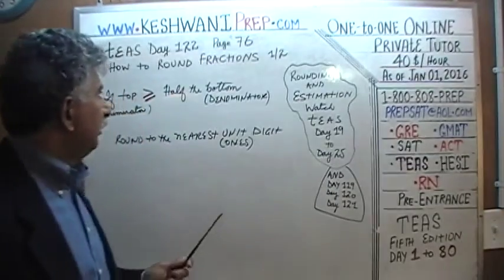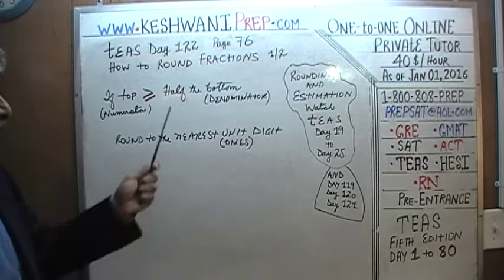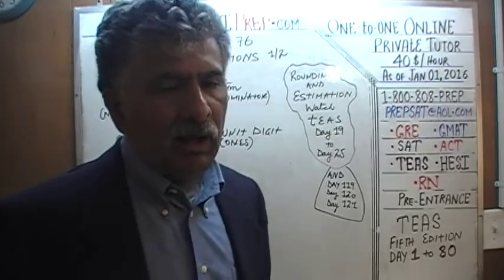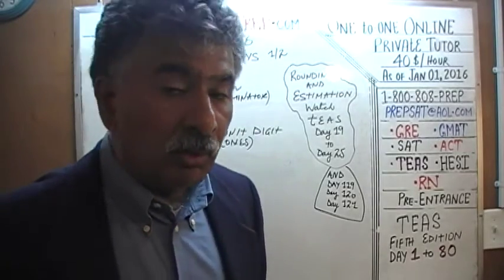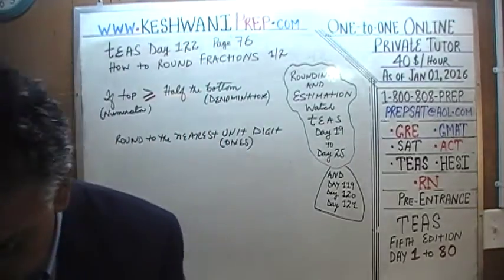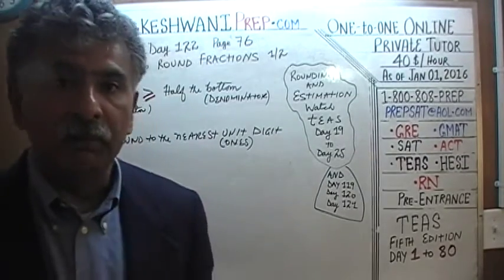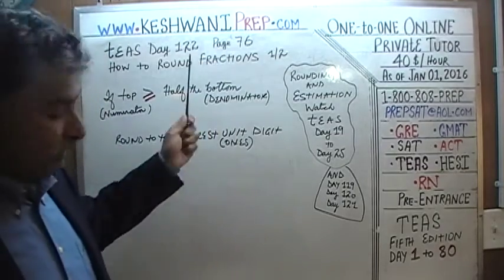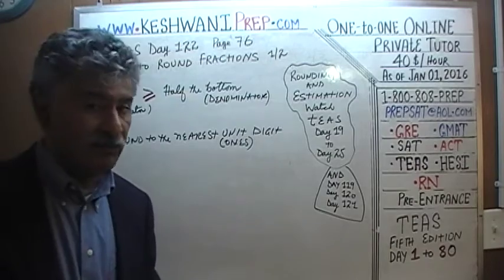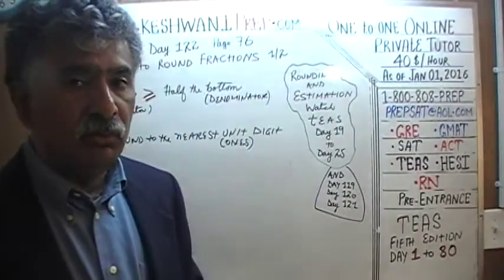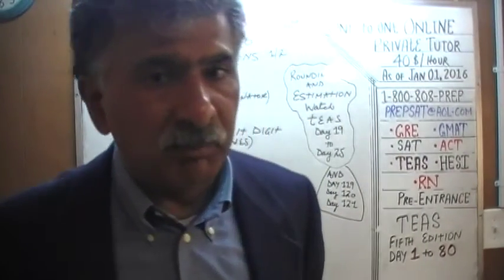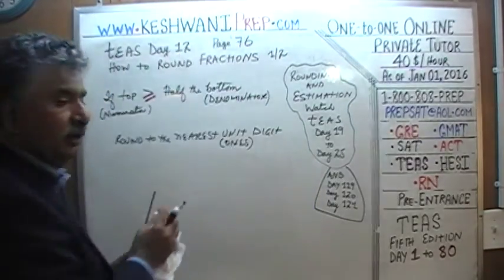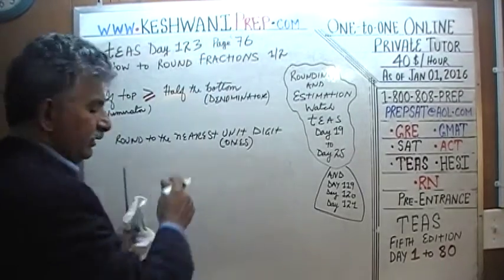Yesterday, we talked about how to round fractions to the nearest unit digit. We are going to continue with that concept today by doing a few examples. I am not going to explain everything in as much detail as I did yesterday. If you have not watched the previous video — day number 122 — it is imperative and critical that you do so. You must watch this series in proper sequence. The concepts are done in a certain order and must be learned in that order. Today is day number 123. Let's begin.